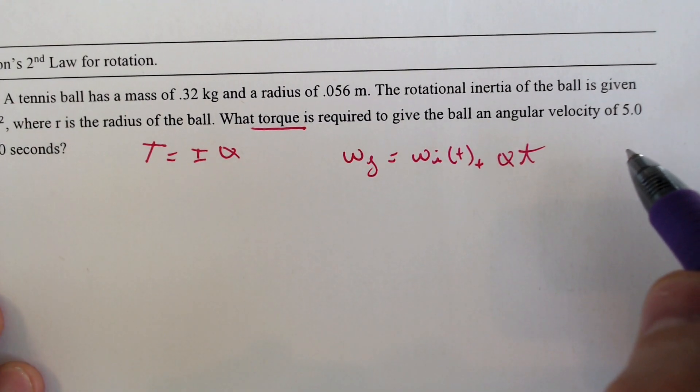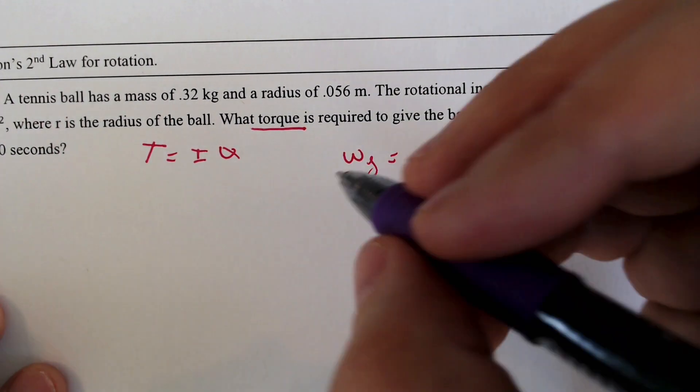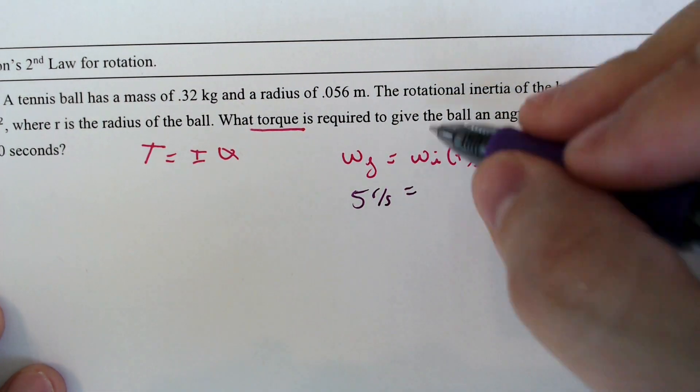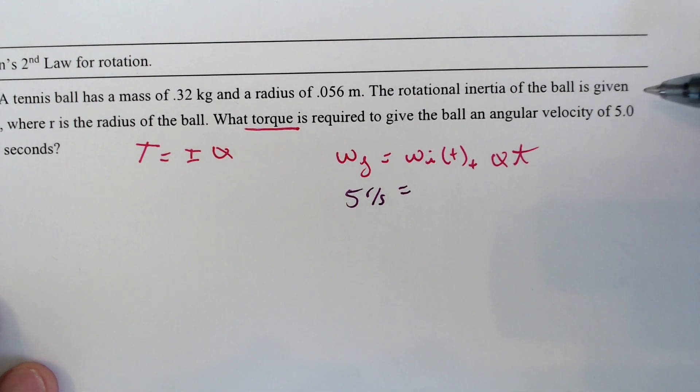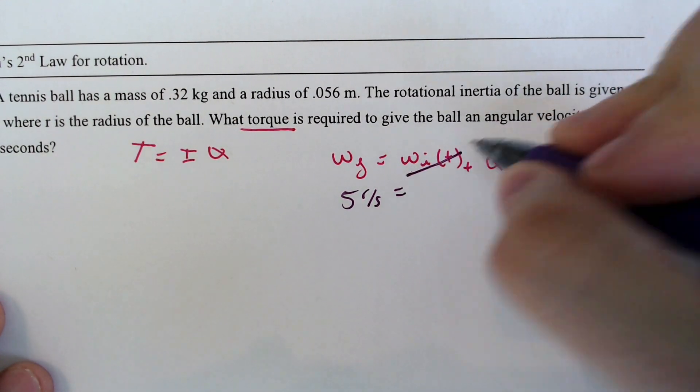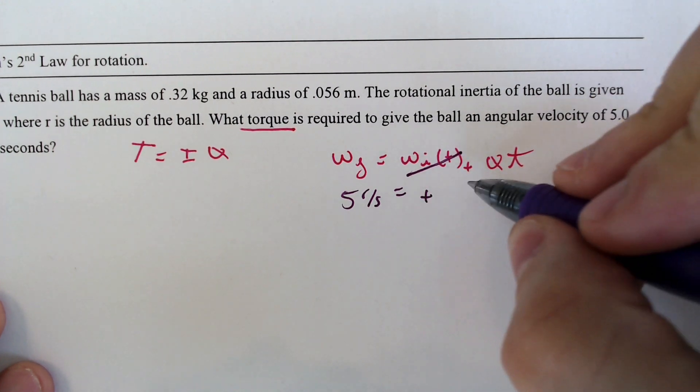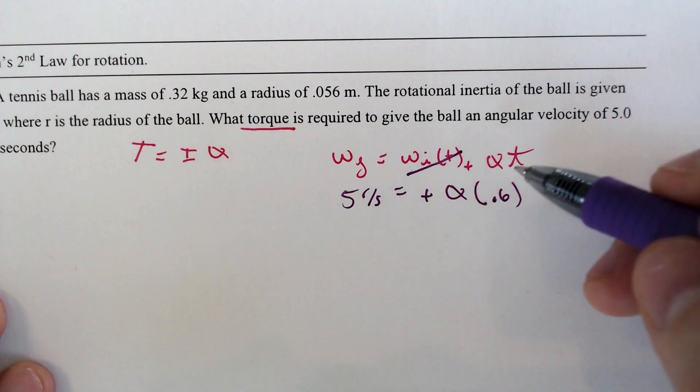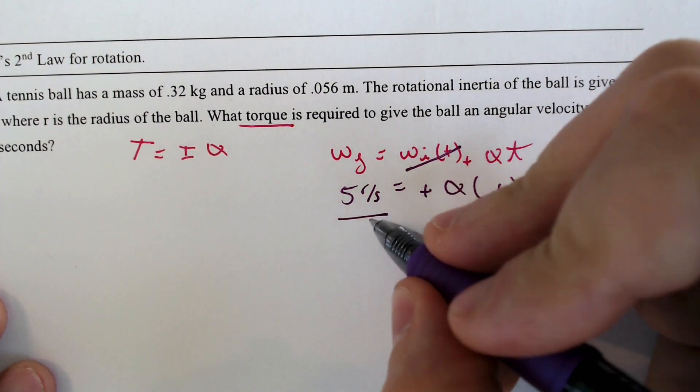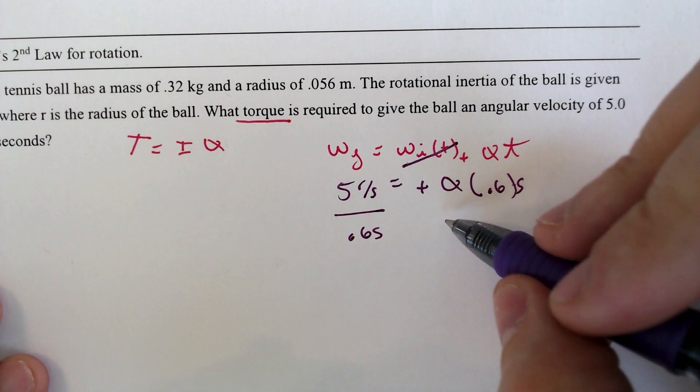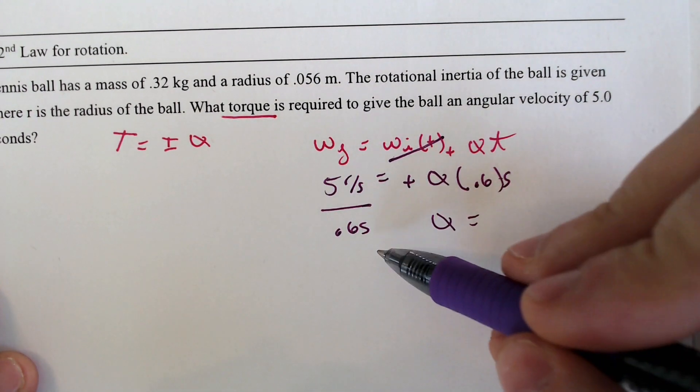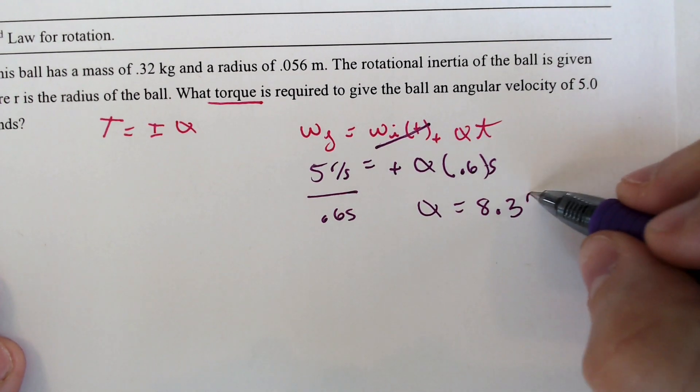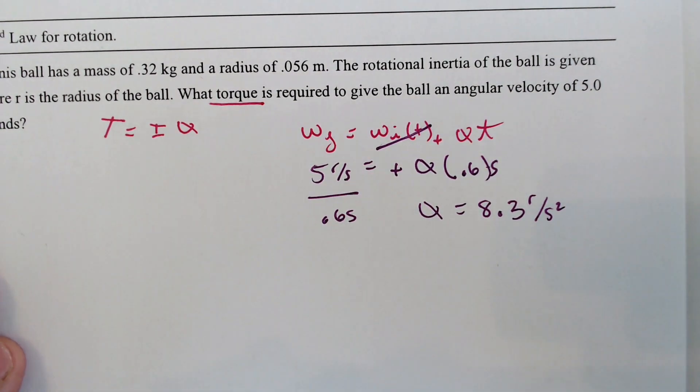We can plug that in: five radians per second equals the initial. It was starting at rest. So with that starting at rest, that would go away. So plus angular acceleration times time, which is 0.6 seconds. So if we solve by dividing by 0.6 seconds, we would end up with an angular acceleration of 5 divided by 0.6, which is 8.3 radians per second squared as the angular acceleration.